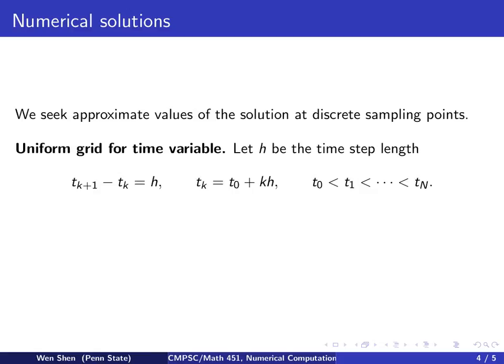For most of the discussion, we will be using a uniform grid for the time variable. You choose a time step and call it h, which is a small positive quantity. Then you sample through time starting from t0, and every two neighboring time steps, t(k+1) minus tk equals to h, so every time you take the same step size.